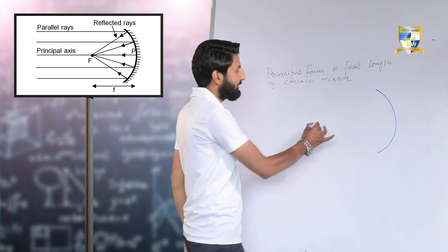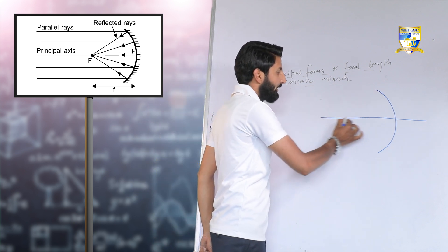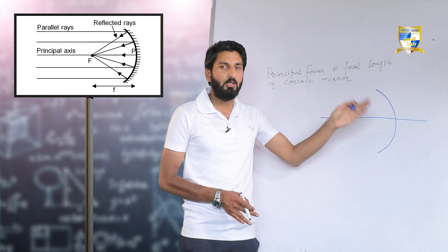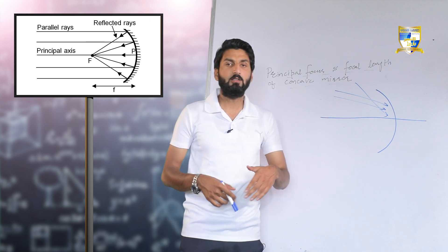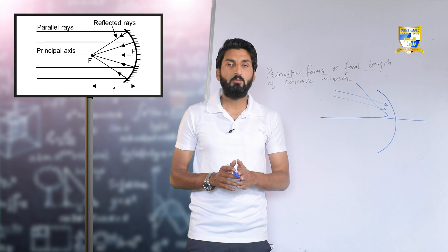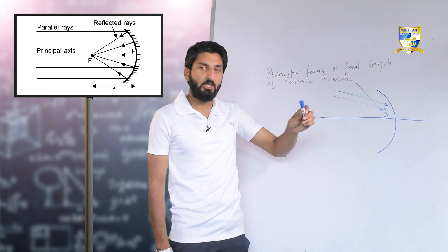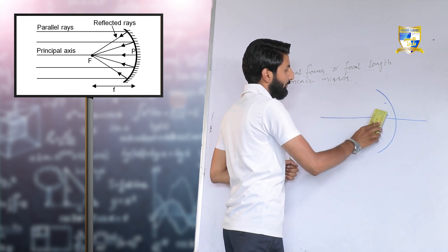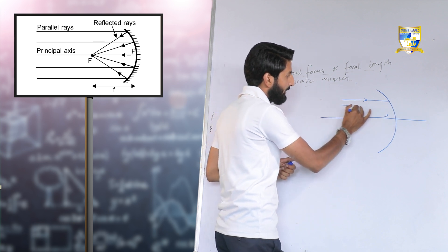This is a concave mirror. An imaginary line passing through it is known as the principal axis. When the rays of light are incident on the mirror, they can come in any direction. But we are talking about only those rays of light when they are incident on the mirror in such a way that they are parallel to the principal axis. We will draw some rays of light — these are the incident rays, parallel to the principal axis.